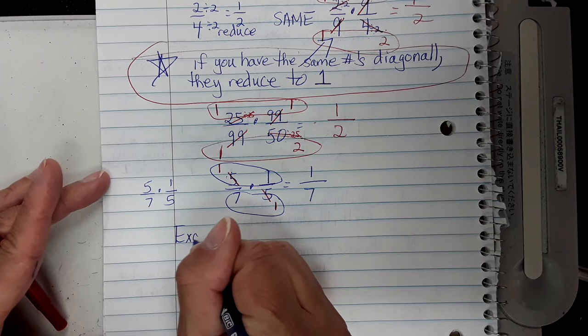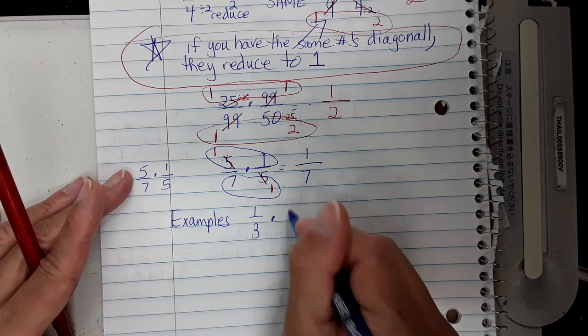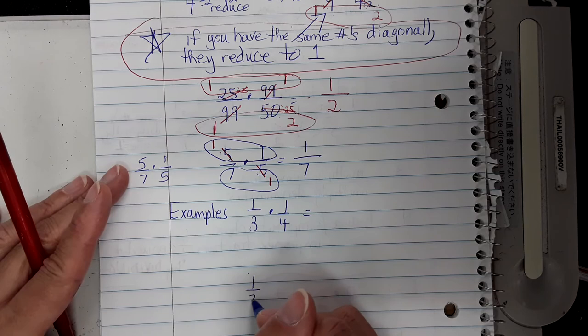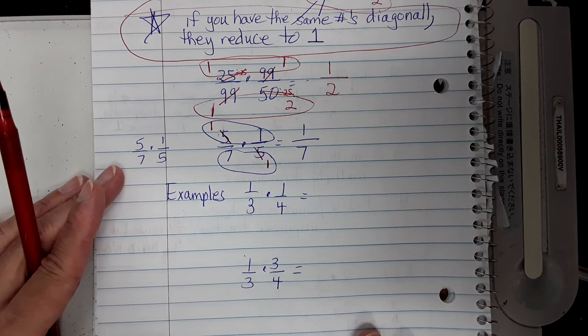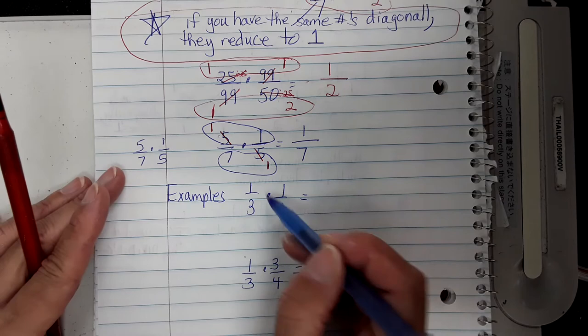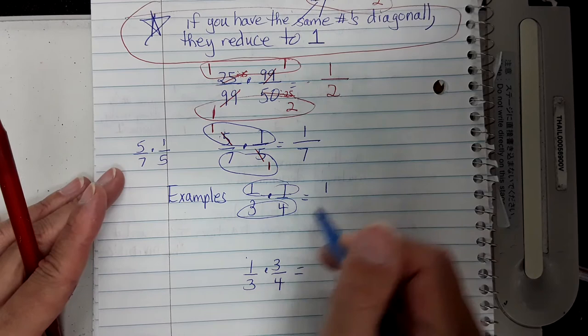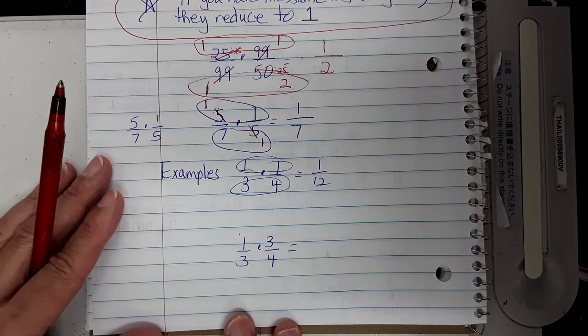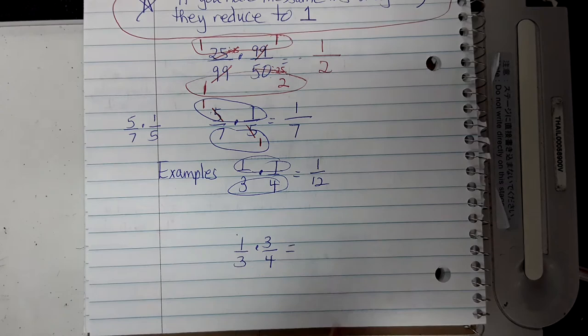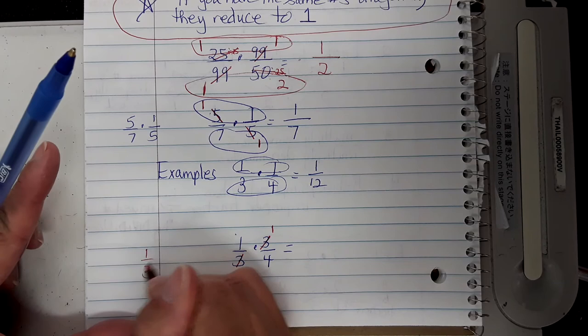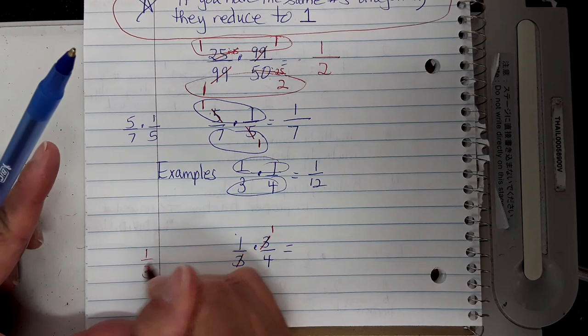Let's try some other examples. Try 1 third times 1 fourth on your own, and also 1 third times 3 fourths. For 1 third times 1 fourth, you can't cross-reduce anything, so just multiply across: 1 times 1 is 1, and 3 times 4 is 12 — answer is 1 twelfth. For 1 third times 3 fourths, the threes are diagonal and the same, so they become ones: 1 times 1 is 1, and 1 times 4 is 4 — answer is 1 fourth.